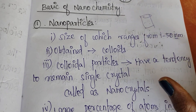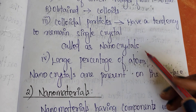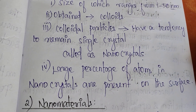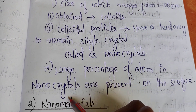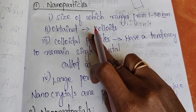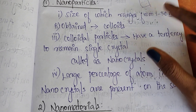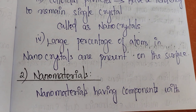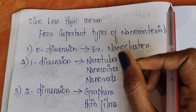Nanoparticles have a size of 1 to 50 nanometers. Large percentage of atoms in nanocrystals are present on the surface. These are colloidal solutions and nanoparticles.